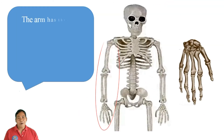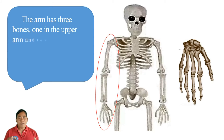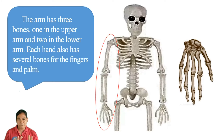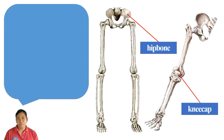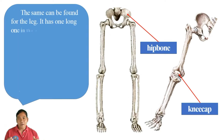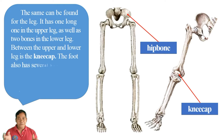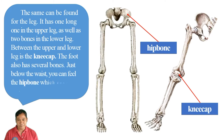The arm has three bones — one in the upper arm and two in the lower arm. The same structure can be found for the leg: one bone in the upper leg and two bones in the lower leg. Between the upper and lower leg is the kneecap. The foot also has several bones. Just below the waist, you can feel the hip bone, which connects the backbone and the legs.